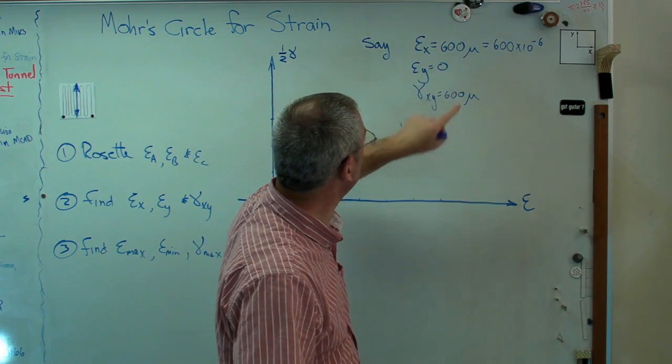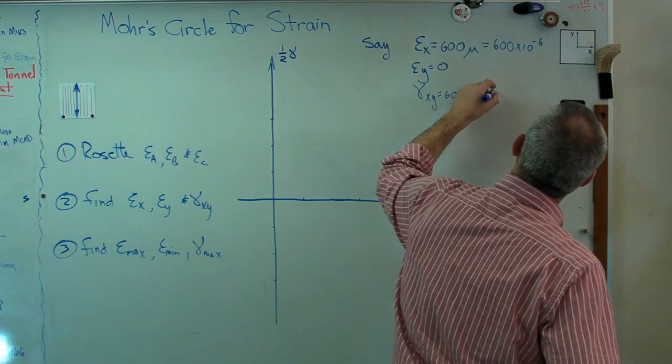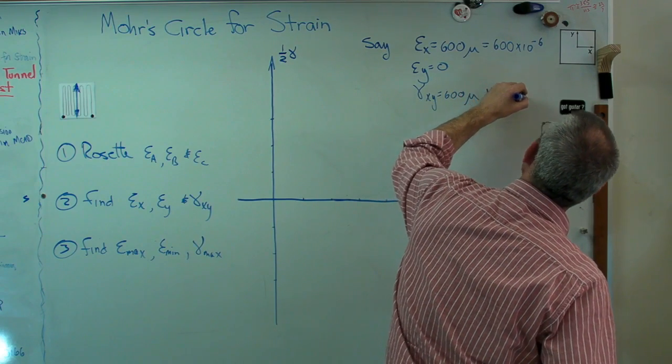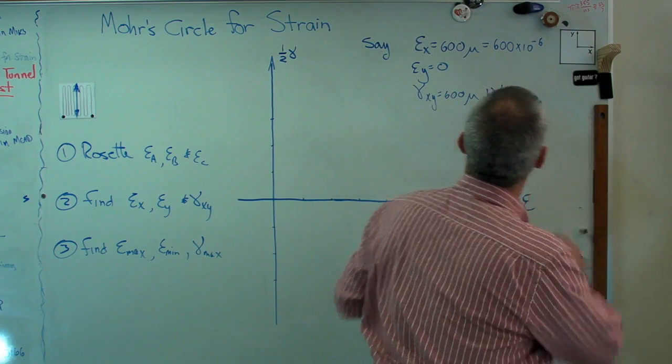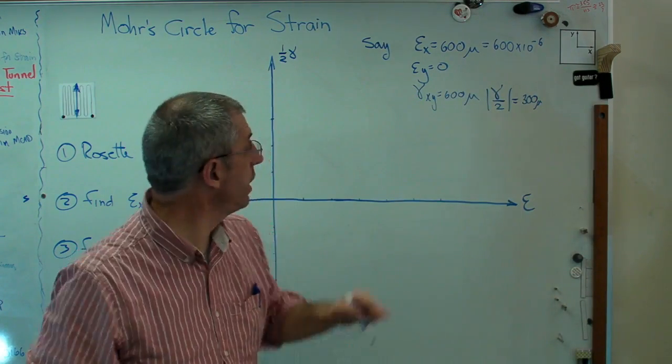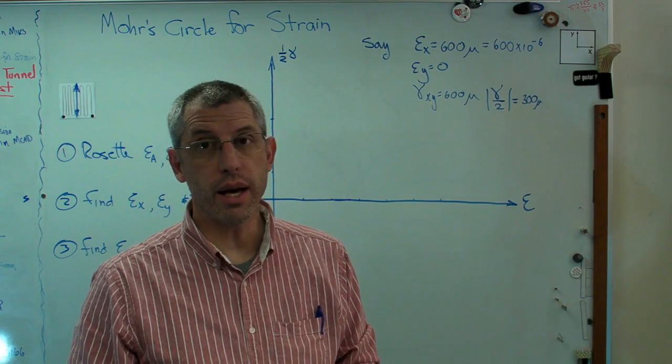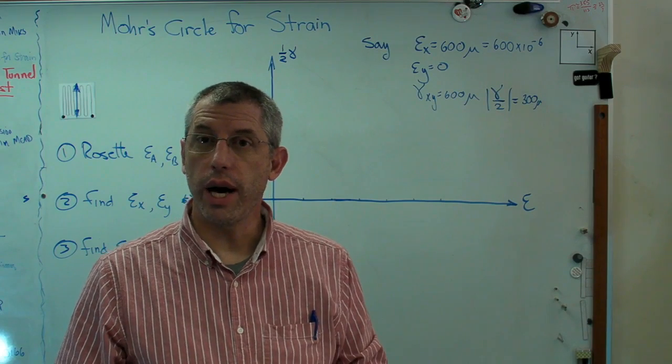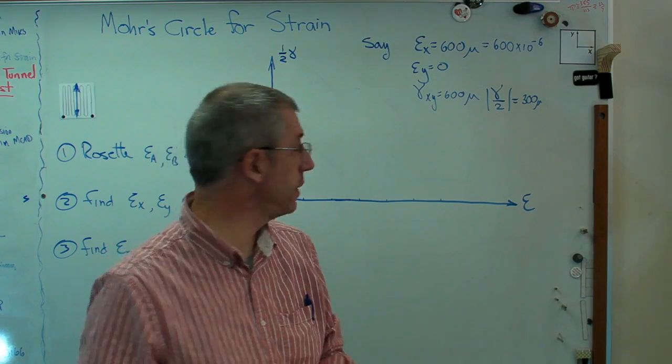So we know what epsilon x is. We know what epsilon y is. We know what gamma xy is. And gamma over 2, I'm going to make an absolute value there. That's 300 micro. And I put the absolute value there because gamma xy is positive. That means gamma yx is going to be negative. So now that I know all those things, let's go ahead and work through Mohr's circles just like we would have with stresses.